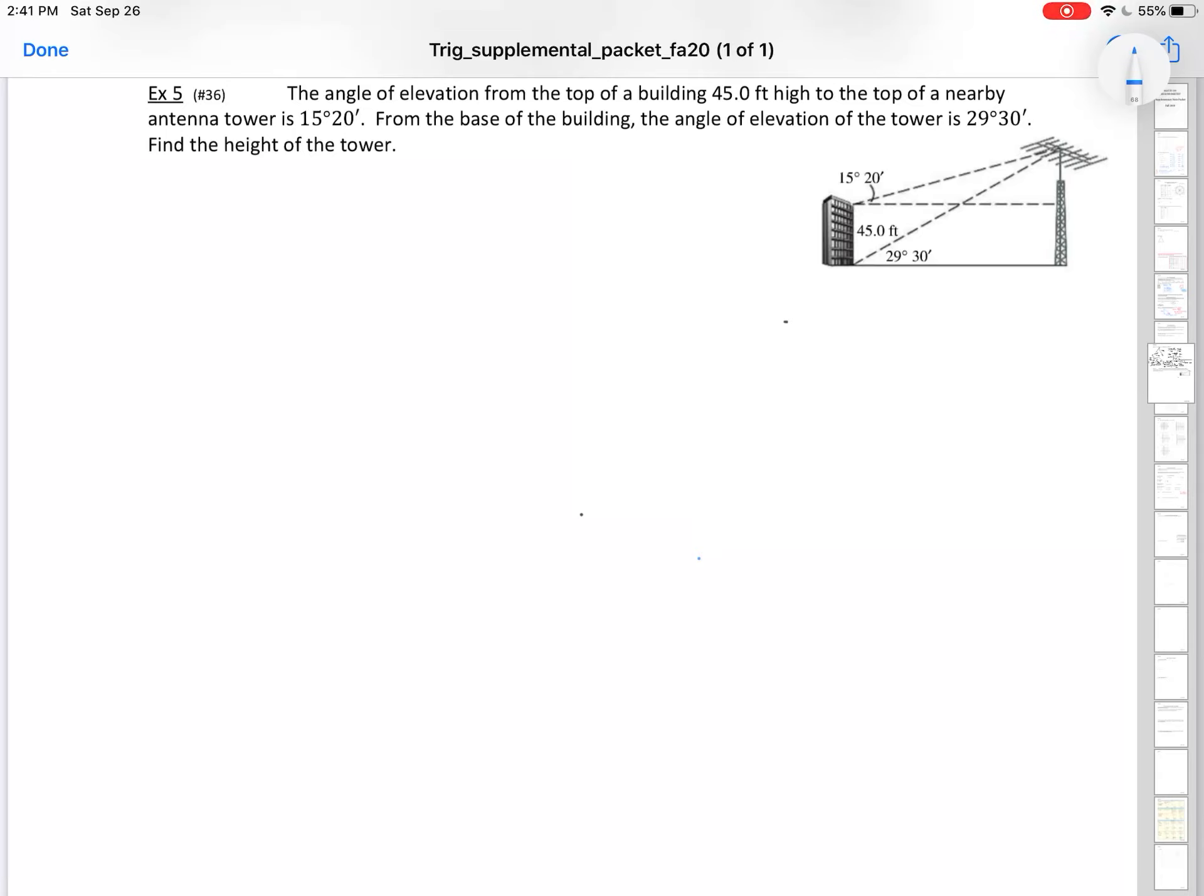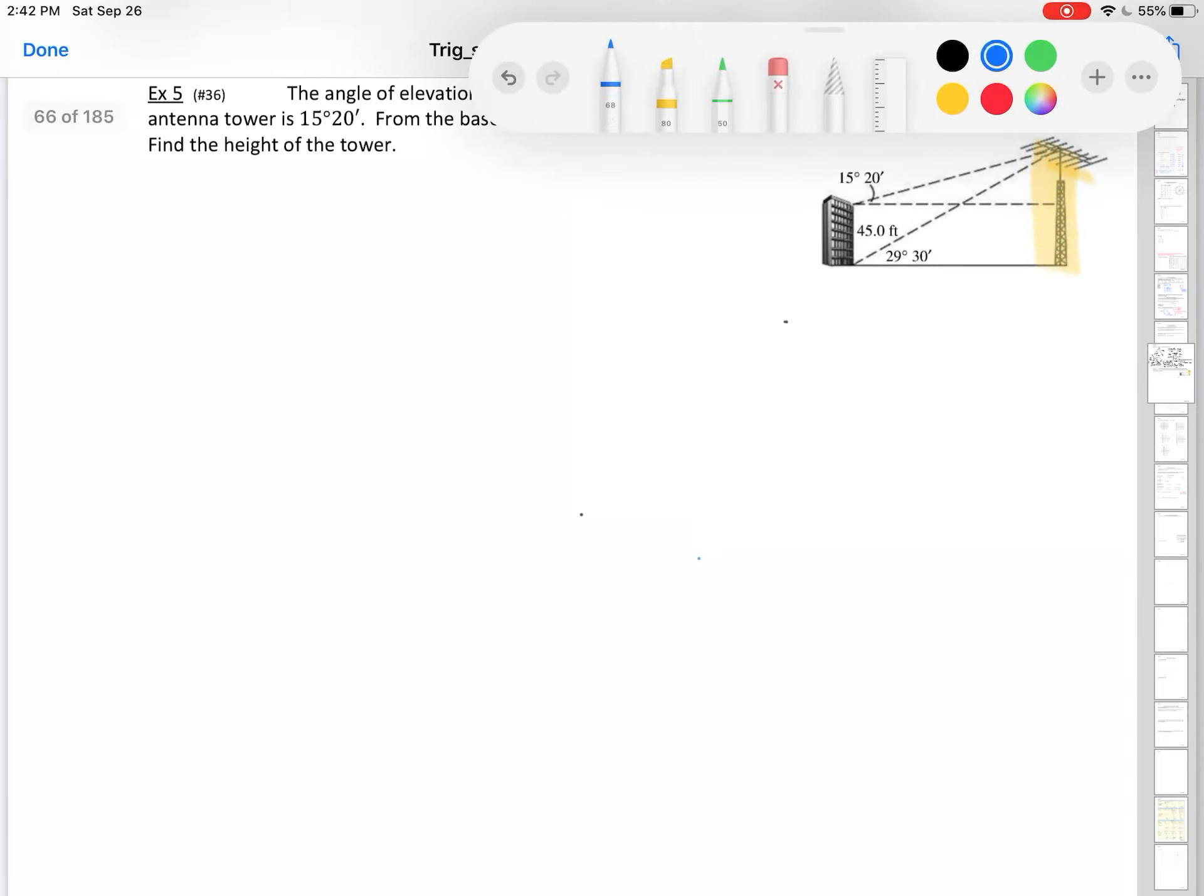Exercise 5 says the angle of elevation from the top of a building 45 feet high to the top of a nearby antenna tower is 15 degrees 20 minutes. From the base of the building, the angle of elevation to the tower is 29 degrees 30 minutes. Find the height of the tower. Let's remember they want us to find this height right here, that yellow highlighted one.